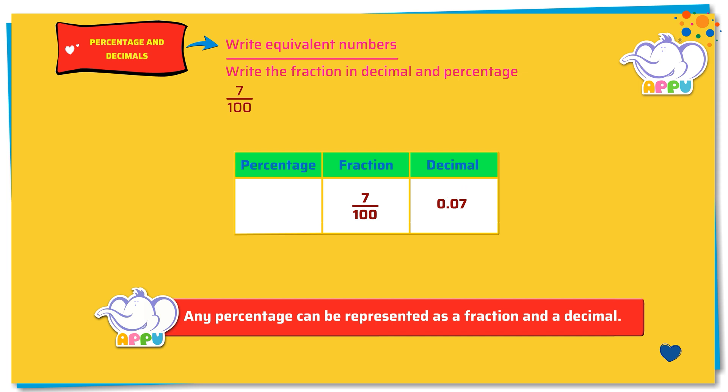To convert a fraction to percentage, we need the denominator as 100. We see that the denominator is already 100, so 7 by 100 equals 7%. How nice!